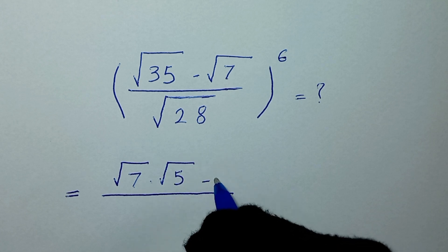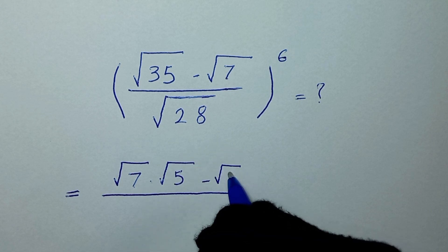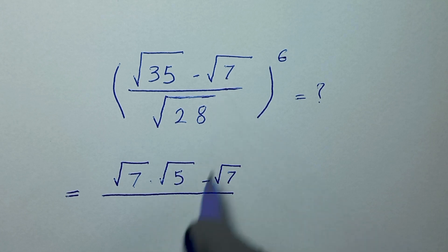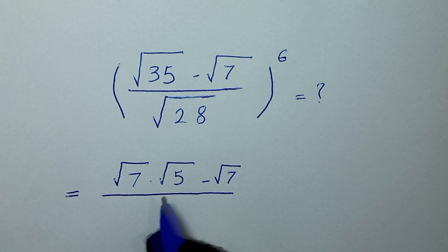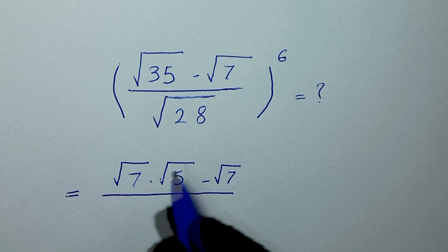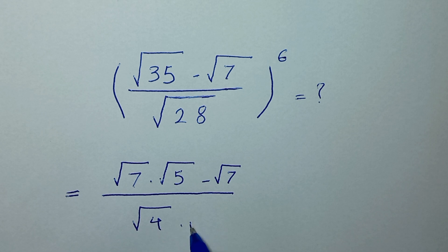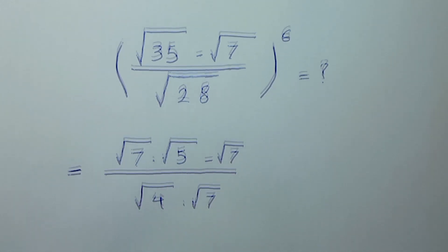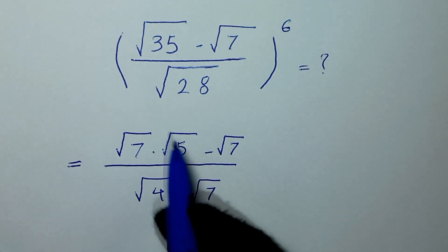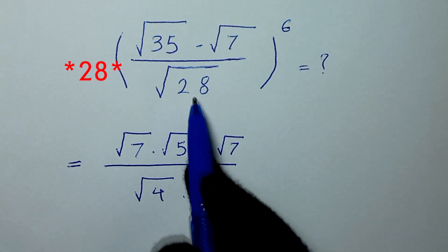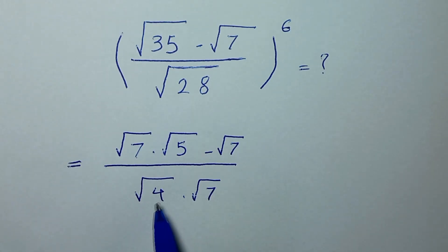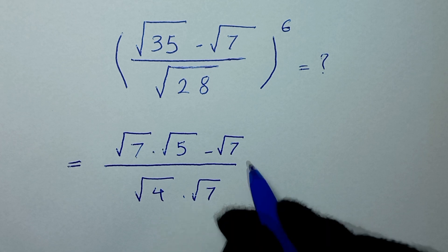And minus square root of 7 over square root of 28. Since 28 is 4 times 7, we write square root of 28 as square root of 4 times square root of 7.